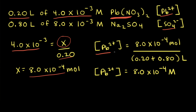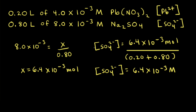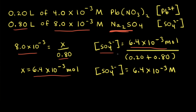To find the concentration of lead two plus ions after the solutions are mixed, we plug in 8.0 times 10 to the negative fourth moles, and for the volume we add the two solutions together: 0.20 plus 0.80 liters. So the concentration of lead two plus ions equals 8.0 times 10 to the negative fourth molar. We do the same calculation for sulfate ions: the original sodium sulfate solution gives 6.4 times 10 to the negative third moles of sulfate ions, and dividing by the total volume gives a sulfate concentration of 6.4 times 10 to the negative third molar.